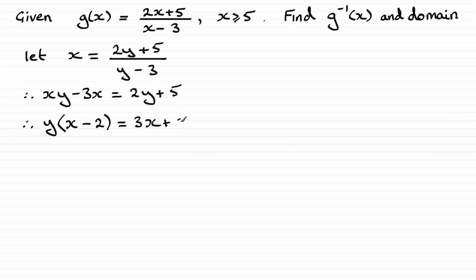So all I did there was add 3x to both sides and subtract 2y from both sides. Next I'm just going to divide both sides by x minus 2 and that's going to give me 3x plus 5 all over x minus 2.